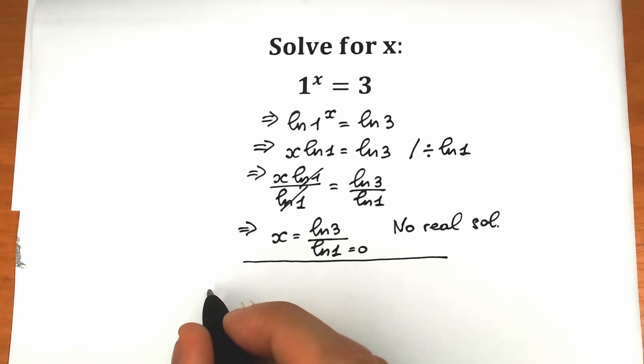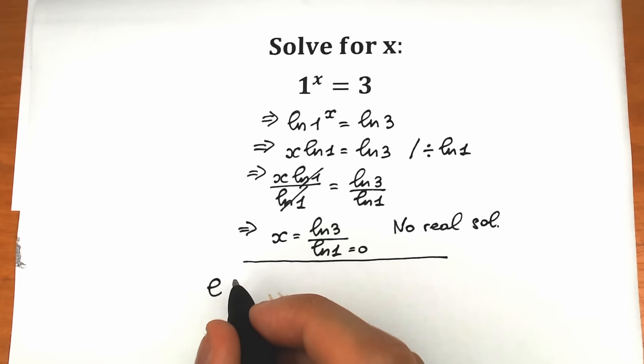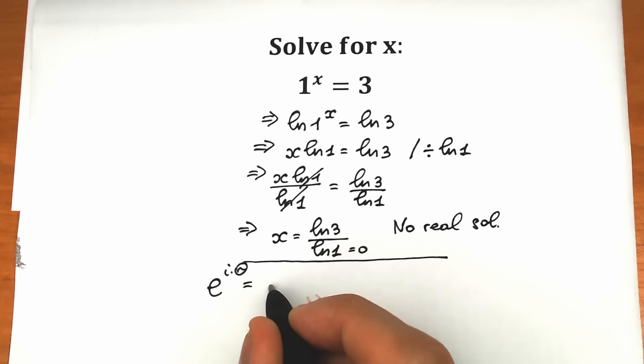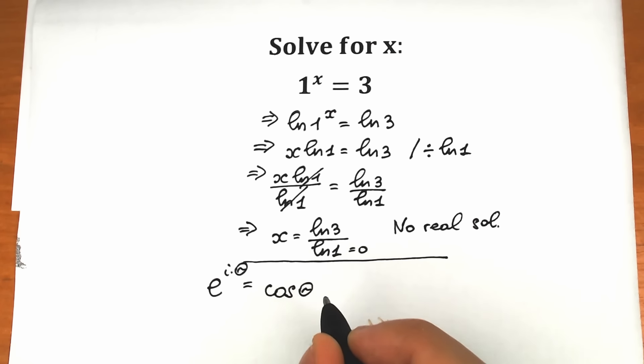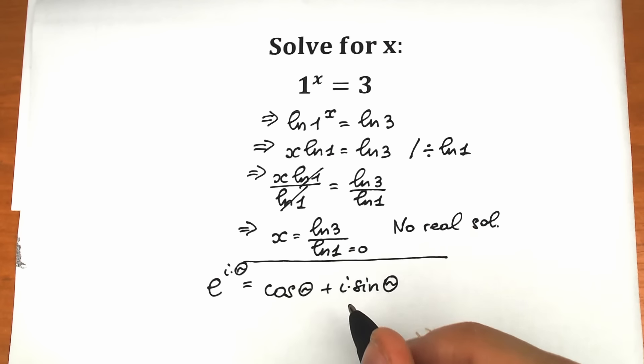Euler's identity states: if we have e to the power i times theta, it equals cosine theta plus i times sine theta. Why is this identity great for us? Because it opens a door to the complex unit. We have a complex unit here, and since we don't have real solutions, let's try to create a complex expression.